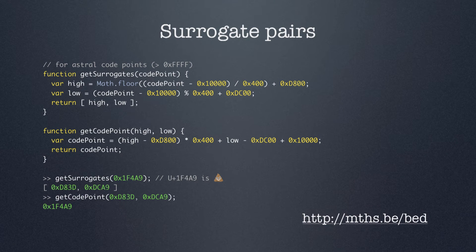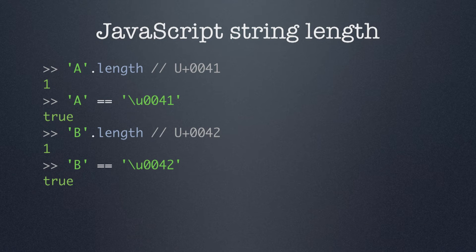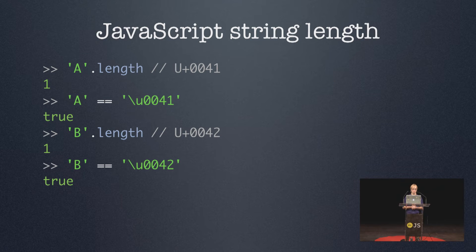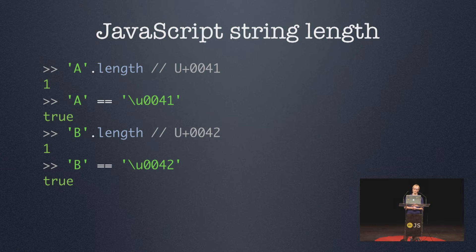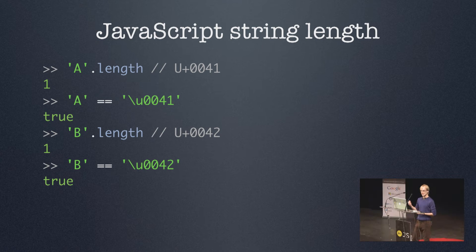For example, if you have a string and you want to count the number of symbols in that string, my first thought would be to use the length property of the string. If you have a string that contains the capital letter A, which is code point 0041, its length property would return the value one. This makes sense, because if you write it as an escape sequence, there's only one backslash U escape sequence there — it's a single character. The same goes for capital letter B — you get a result of one. In these examples, the length property just happens to reflect the number of characters in the string, but this is not always the case.